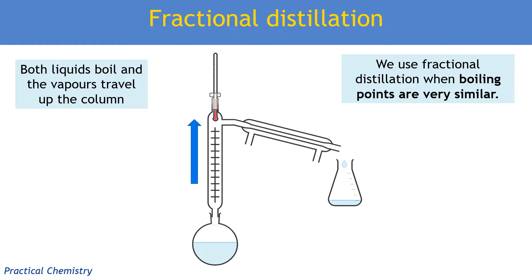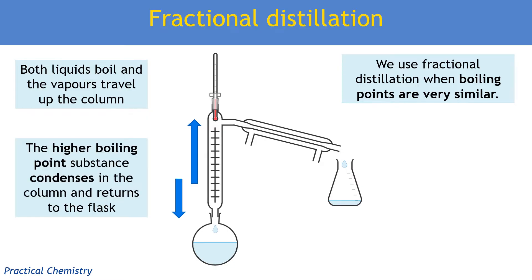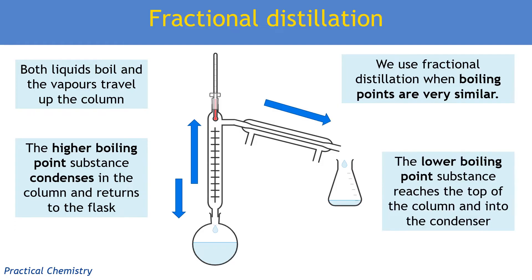That mixture of vapours of ethanol and water, for example, will start to travel up that glass column. But the higher boiling point substance is going to condense first because it condenses at a higher temperature, whereas the other one will stay a gas at that temperature. So that higher boiling point substance will condense in the column and return to our flask, whereas the lower boiling point substance is more likely to reach the top of the column and into the condenser to be collected as a liquid.